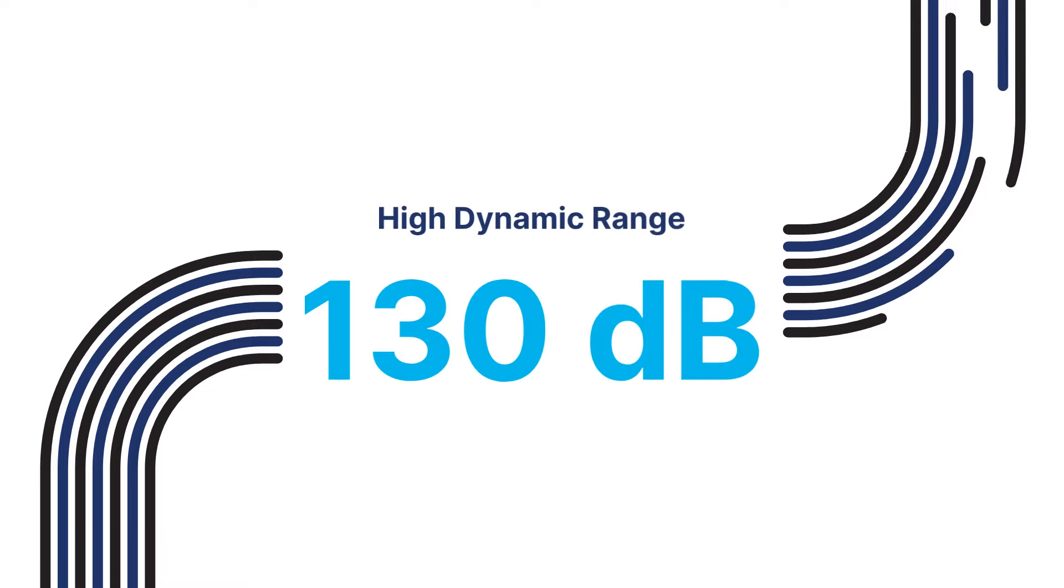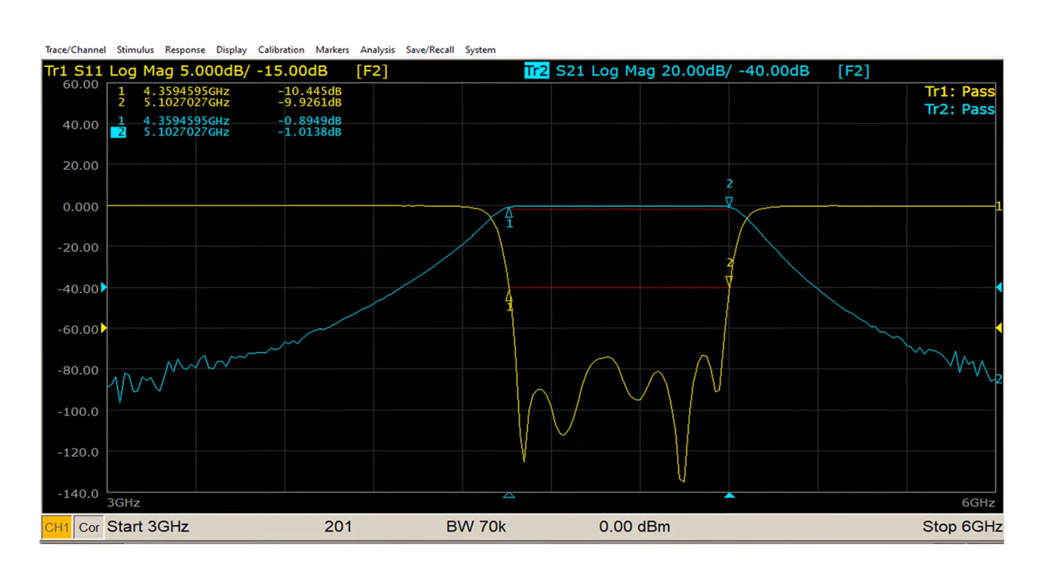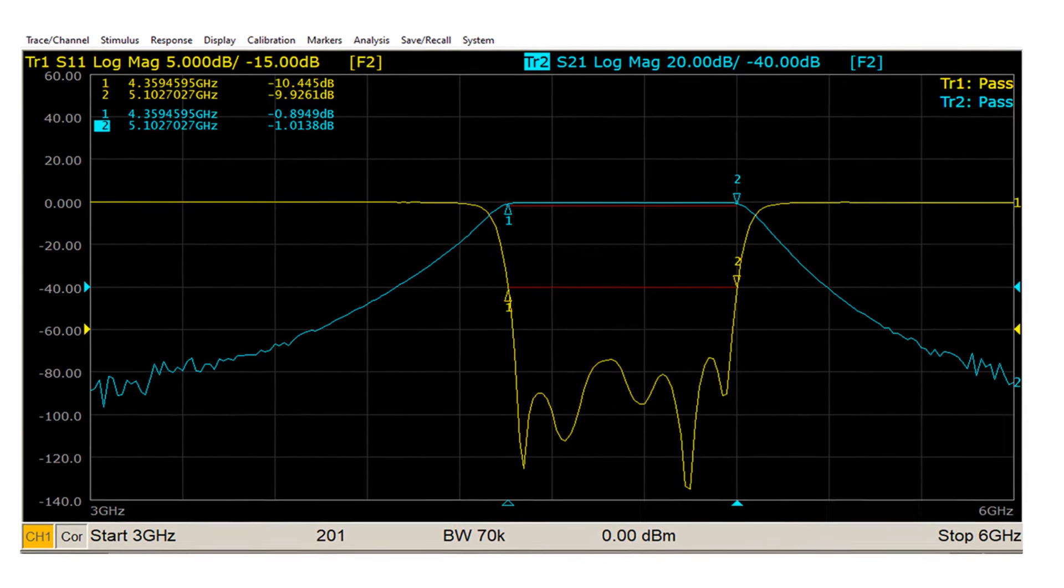Boasting a high dynamic range of up to 130 dB, the VNA can measure very weak responses, ensuring even the smallest signals are accurately captured and analyzed.